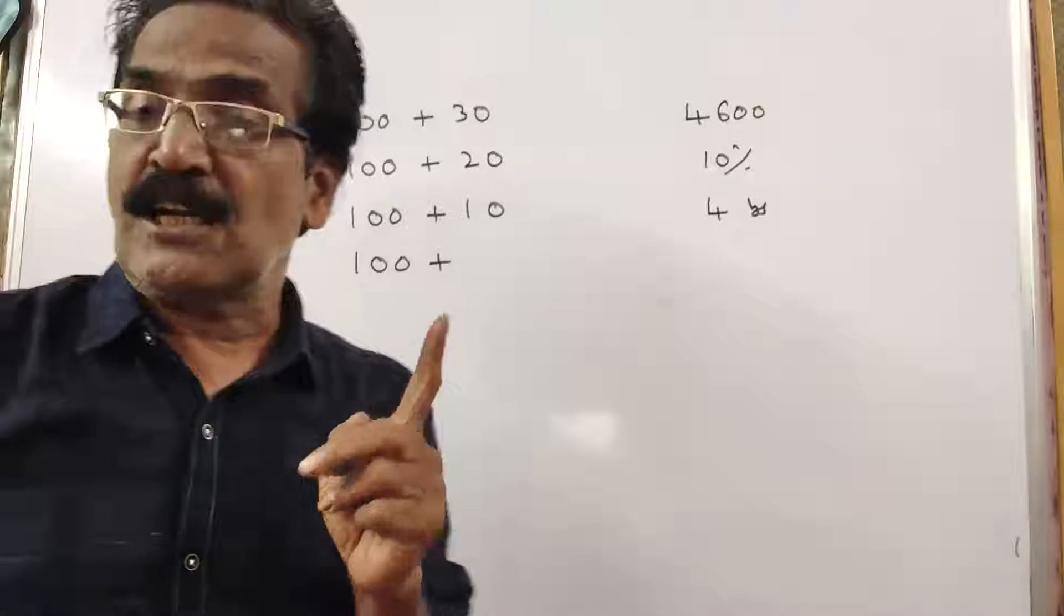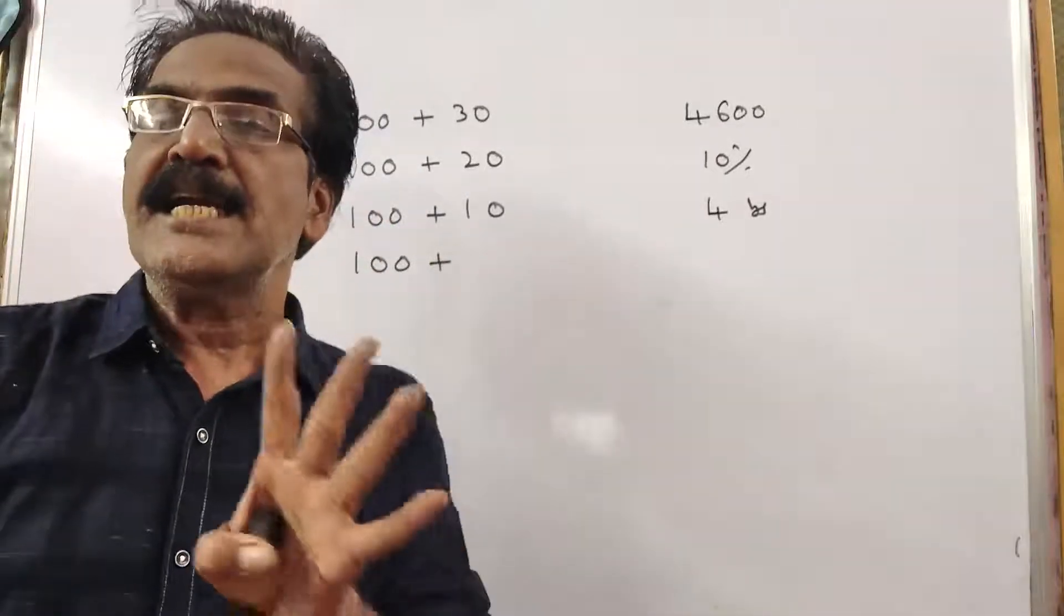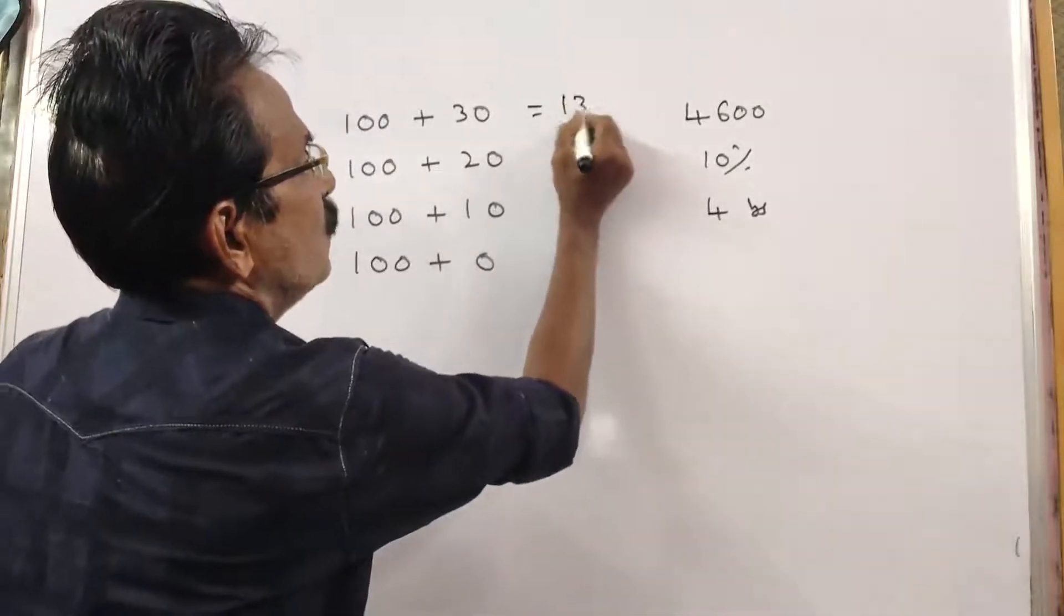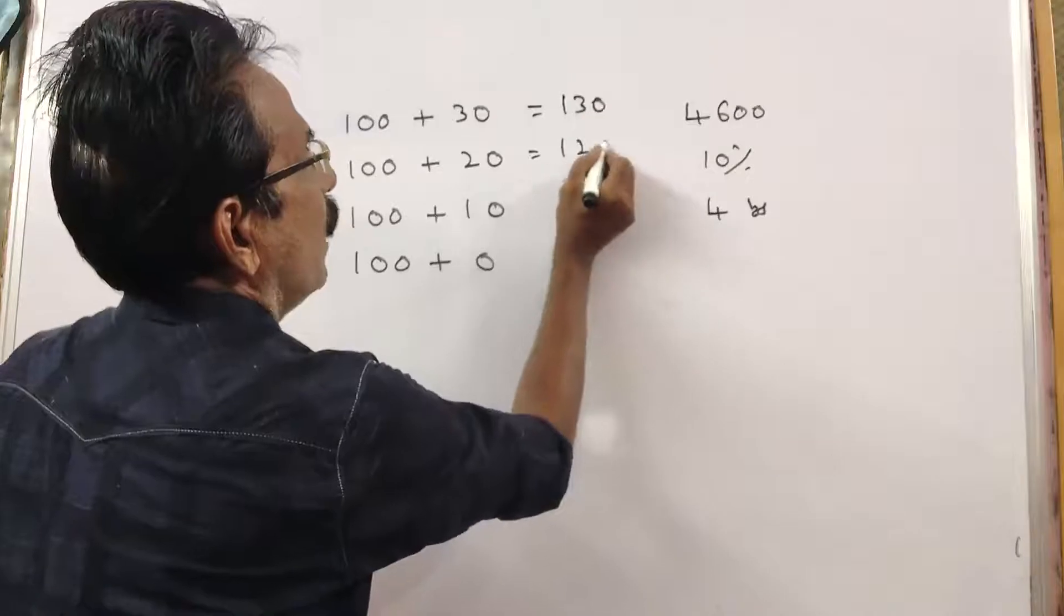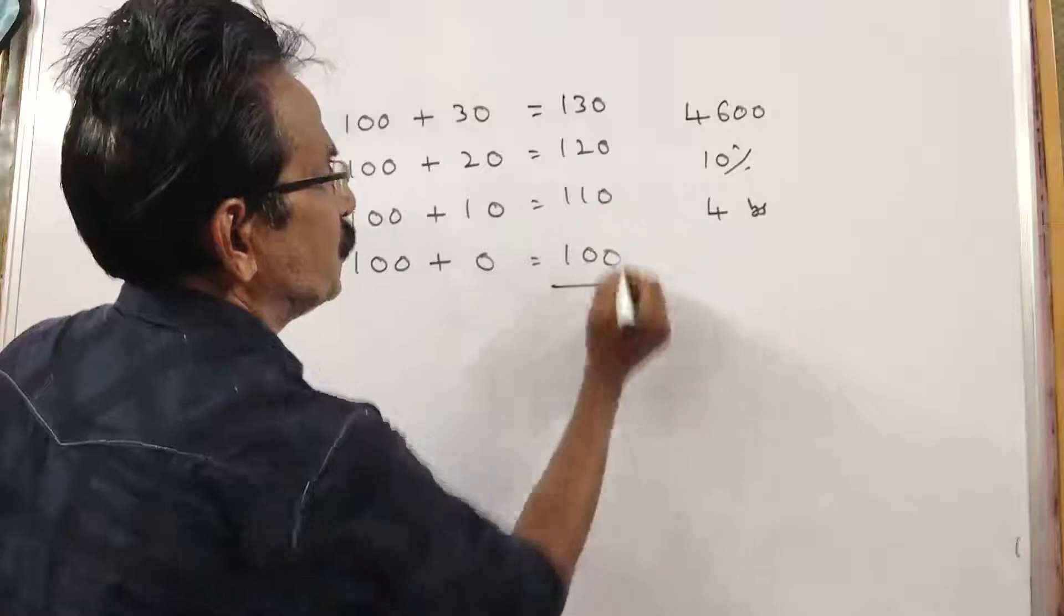And the installment you pay at the end of 4 years, that is, the final installment, will fetch no interest. That is 0. So, the total amount comes to 130, 120, 110, and 100. This is the total amount due, 460.